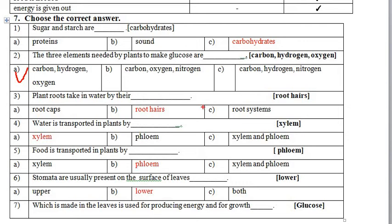Next MCQ: 'Plants take in water by their __.' The correct option is root hairs, not root caps. Next: 'Water is transported in plants by __.' In a plant body there are vascular bundles of two types — xylem and phloem. Xylem is responsible for the transport of water, so the correct option is xylem.